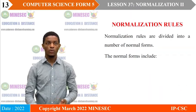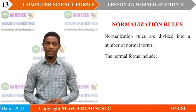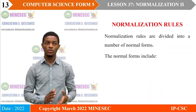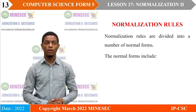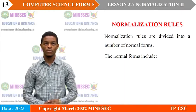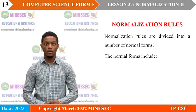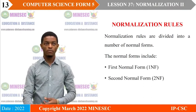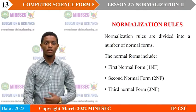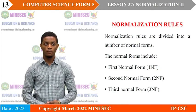We have normalization rules which are divided into a number of normal forms. The normal forms include the first normal form, the second normal form, and the third normal form.